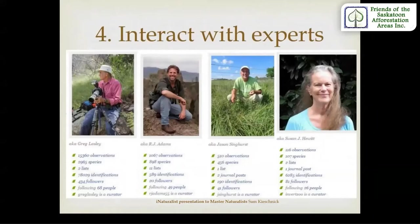As you start out on iNaturalist photographing what is around you, various people will come along and make comments on your observation. Some will be experts in a particular field, like Nathan Taylor who maps, observes, and confirms mainly the Euphorbia genus, or Spurge flowering plants. Some will be citizen scientists like members of the general public, and others will be general biologists or naturalists. iNaturalist records the number of observations you take of biodiversity, how many have been identified to species level, if you've created any lists, how many identifications you've made for other people, and if you've decided to write a journal entry.